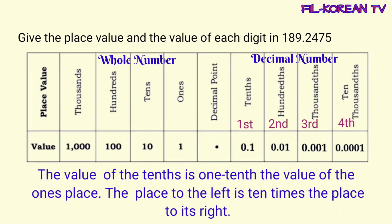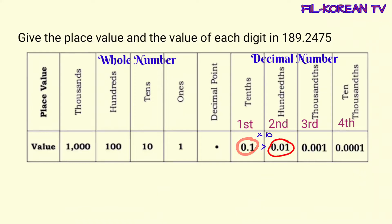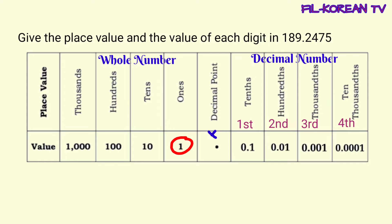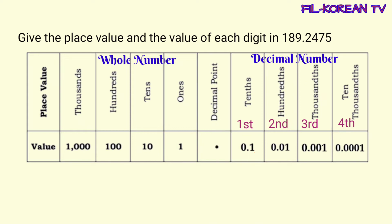The place value of the first digit to the left of the decimal point is ones, followed by tens, hundreds, and thousands. Ang place value naman ng first digit to the right of the decimal point ay tenths. Ang pangalawang digit naman ay hundredths. Ang pangatlong digit galing sa decimal point ay thousandths. At ang place value naman ng pangapat na digit sa kanan ng decimal point ay ten thousandths. The value of the tenths place is one tenth the value of the ones place. The place to the left is ten times the place to its right.